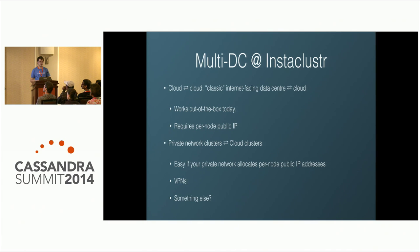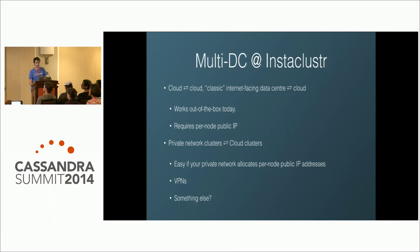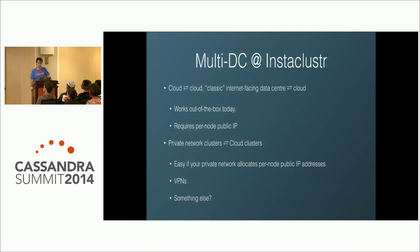We want to be able to do multi-DC clusters between data centers that don't follow the traditional DC model — specifically data centers where compute instances don't all have public IP addresses allocated. We want to allow customers to bridge nodes in their private data centers into an Instacluster-managed cloud data center, either to extend out into the cloud or bring the cloud in. Cloud-to-cloud is easy, cloud-to-traditional is also pretty easy, but private-to-cloud is typically difficult because without per-node IP addresses you have connectivity problems.